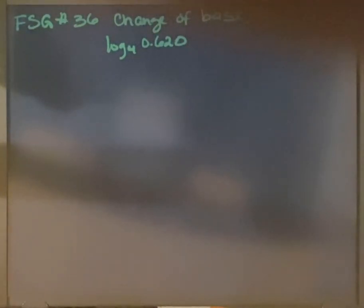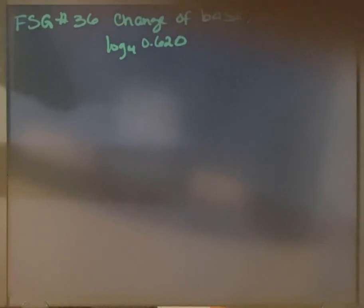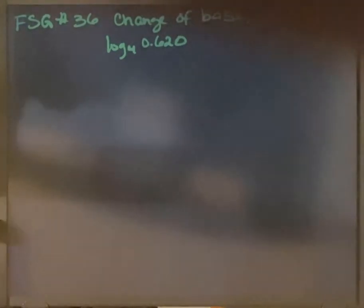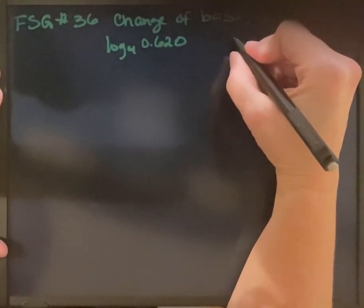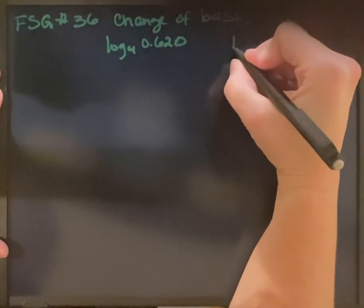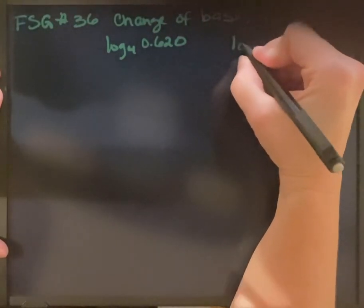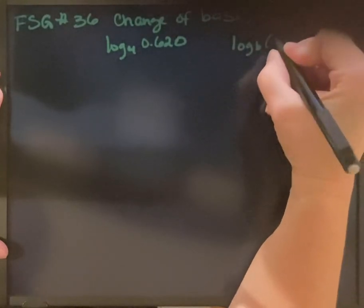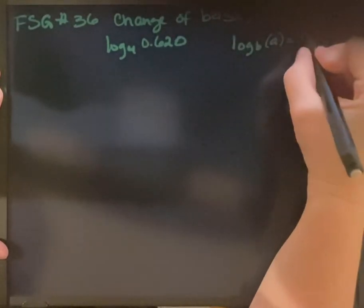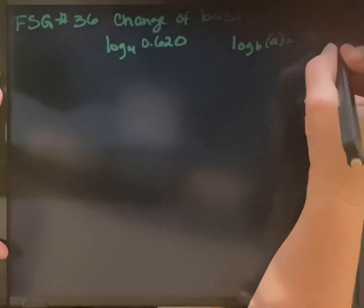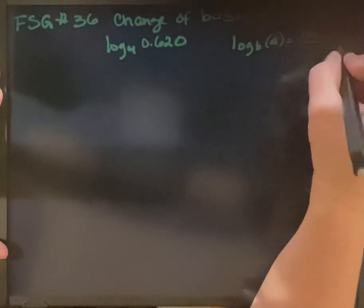This question is asking us to use the change of base rule to find the logarithm to four decimal places. The change of base rule says if we have log base B of A, that's the same as log base X of A over log base X of B.